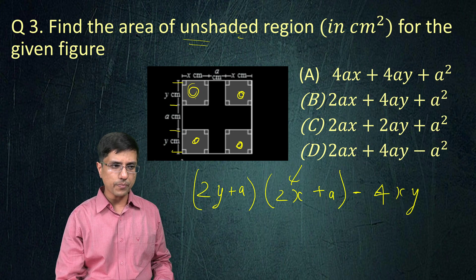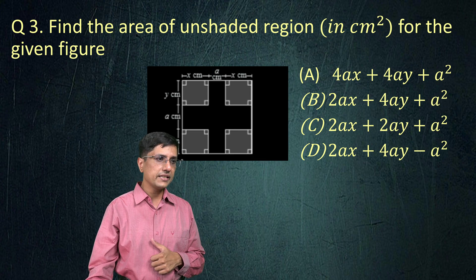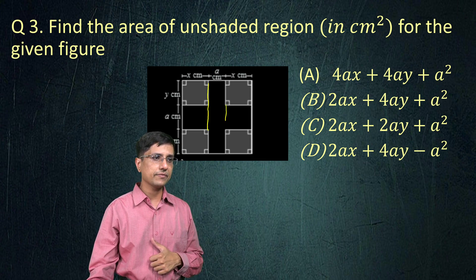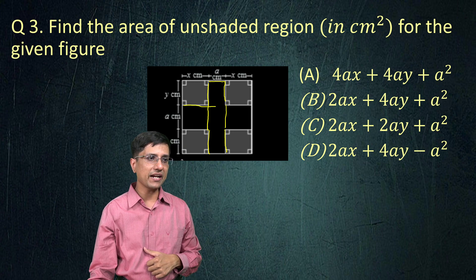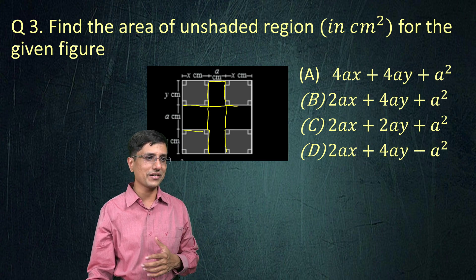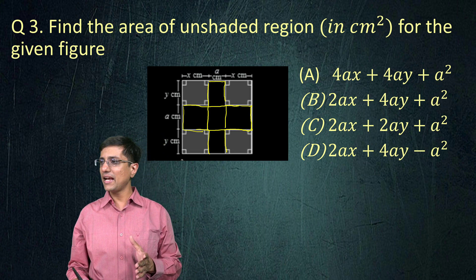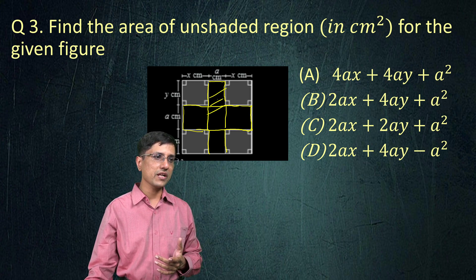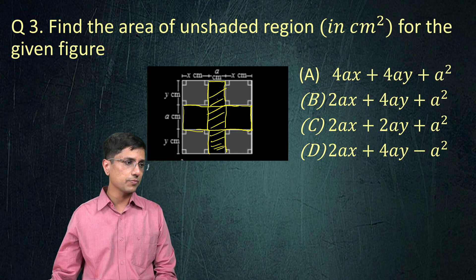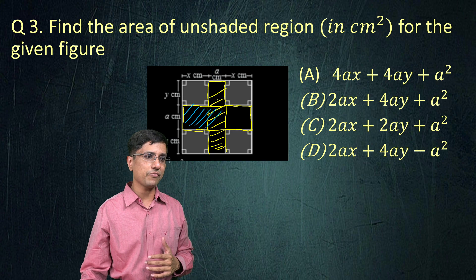If you notice, this plus shape is made up of two rectangles. One is the long vertical rectangle, and the second is the flat horizontal rectangle. We are required to find the area of the long rectangle plus the area of the small rectangle. Of course, the center portion has been counted twice, so I need to remove the center region. That is the idea we are going to proceed with.